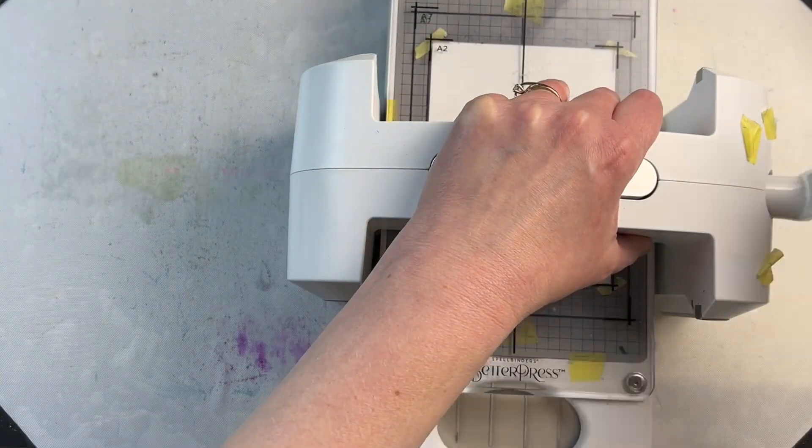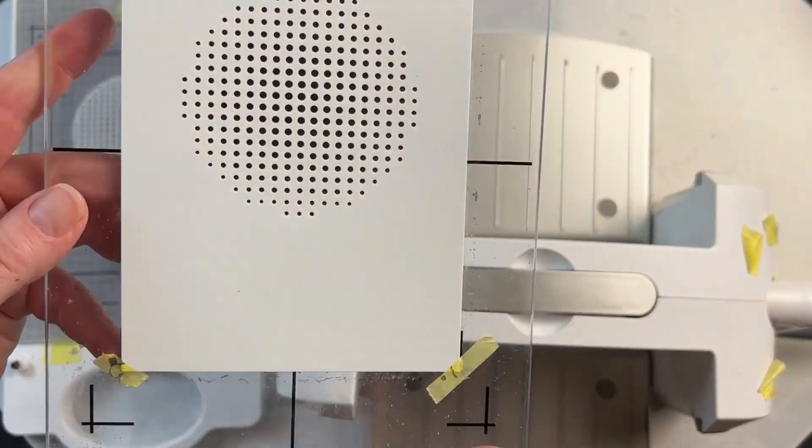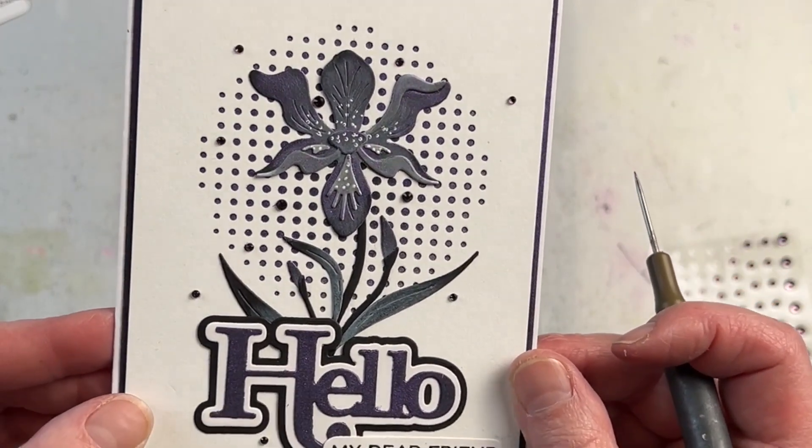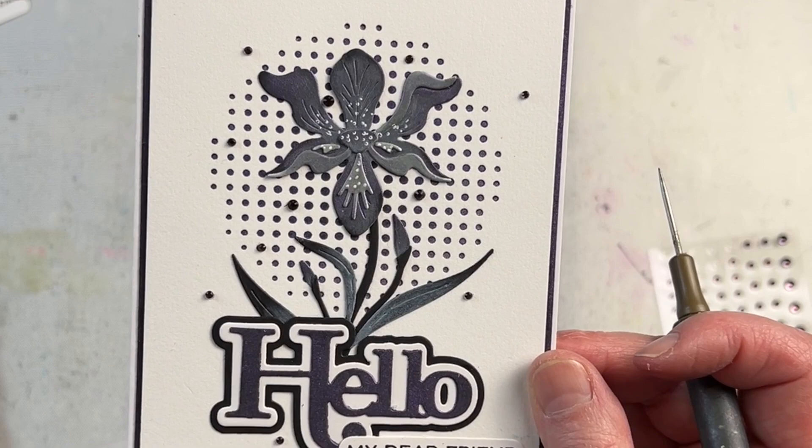Put the two together and run them through the Spellbinders Platinum 6 machine. I love the pressed images you get with these press plates. This creates a very unique background for pretty much any card.